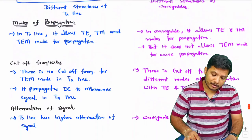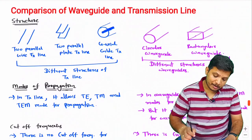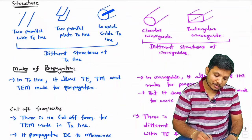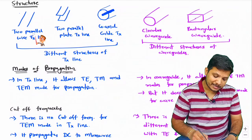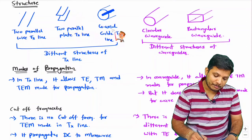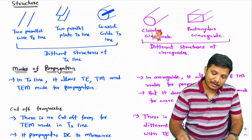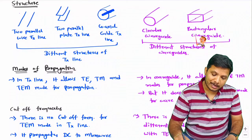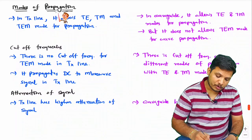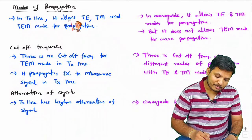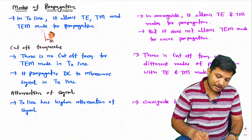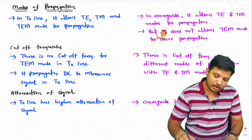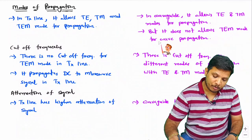To summarize the comparison: for structure, transmission line has three categories — two parallel wire, two parallel strip, and coaxial cable — while waveguide has two types in general use: circular waveguide and rectangular waveguide. For modes of propagation, transmission line allows TE, TM, and TEM modes, but waveguide only allows TE and TM modes; it does not allow TEM mode for propagation.